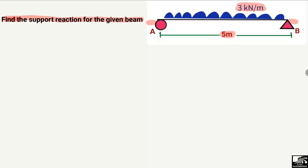To find out the support reactions, we have two supports: one is R_A and the other is R_B. We are going to find out these support reactions R_A and R_B, as both are unknown to us.